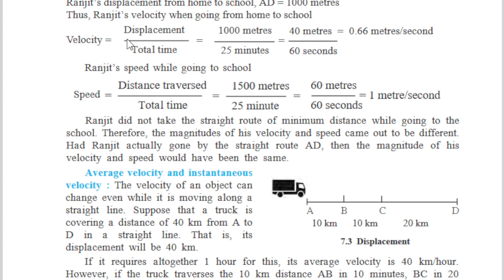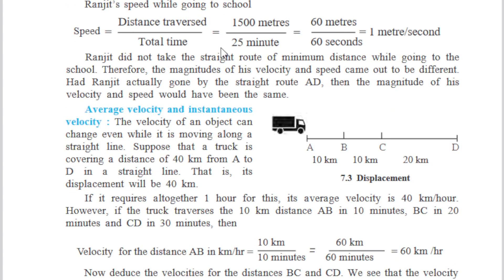So this is the velocity of Ranjit. Now, for Ranjit's speed: total distance is 1500 meters, total time is 25 minutes, giving 1 meter per second. So his speed was 1 meter per second. Ranjit did not take the straight route of minimum distance while going to school. Therefore, the magnitude of his velocity and speed came out to be different. Had Ranjit actually gone by the straight route AD, then the magnitude of his velocity and speed would have been the same.